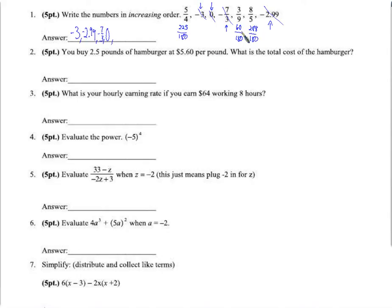Now we can compare: 60 is the smallest, then 225, then 288. So the order is 3 ninths, then 5 fourths, then 8 fifths. When we find common denominators we make the fractions comparable — they can't be compared until they are the same size, and they are the same size when you find a common denominator.